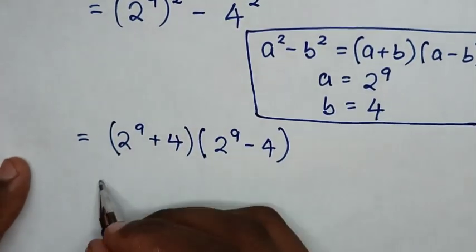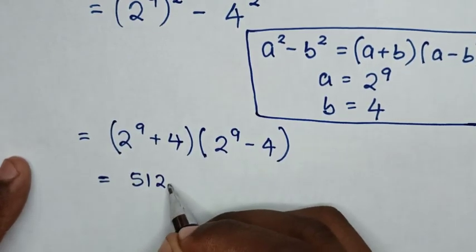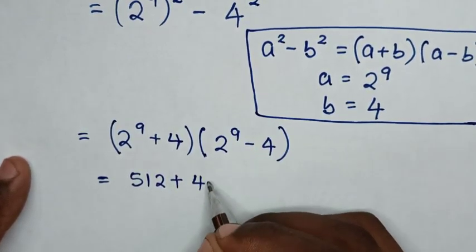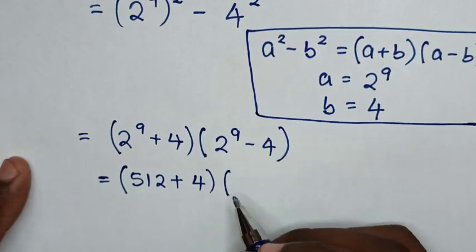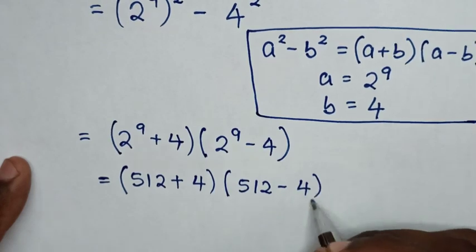This equals, since 2^9 is 512, (512 plus 4) times (512 minus 4).